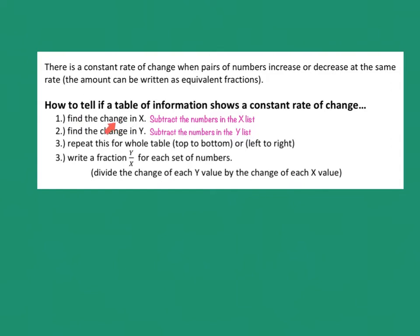If there's a table or a graph, we can look at the x values and we're going to find the change. What that means is we're going to subtract the numbers in the x list, either going down or sideways. We're also going to do that to the y values. We're going to find the change in the y values by subtracting the numbers in the y list. We will do it for the whole table just to make sure that it's consistent.